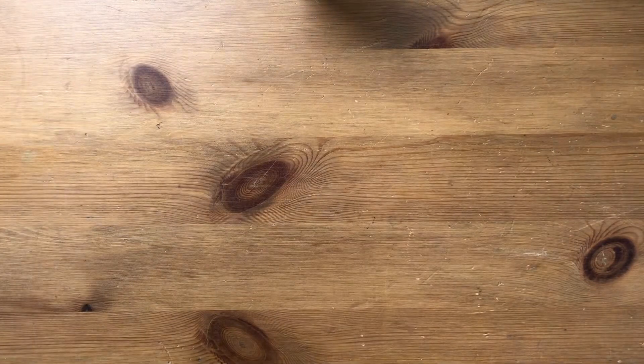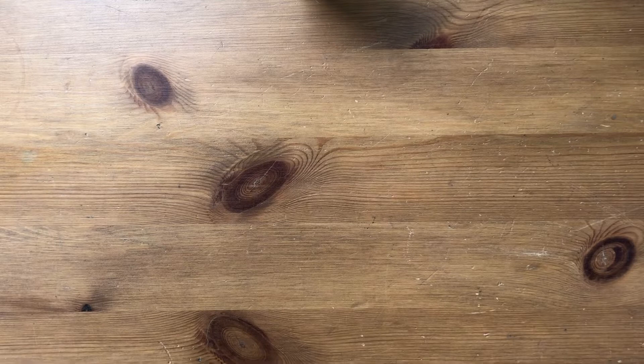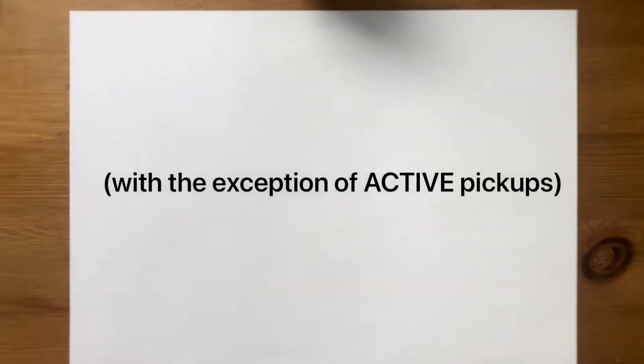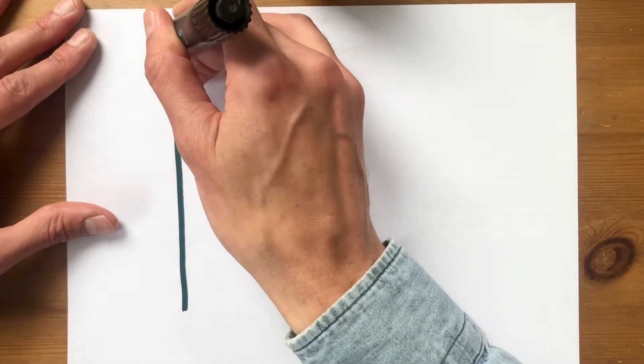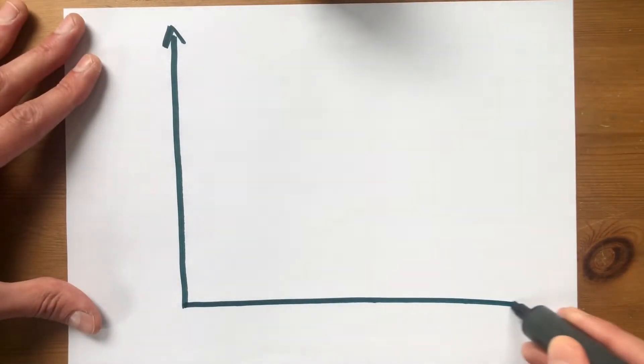Let's look instead at the impedance straight off the electric guitar. This applies to any magnetic pickup, any traditional, typical, normal electric guitar pickup. So humbuckers, P90s, single coils, overwound, underwound, vintage,